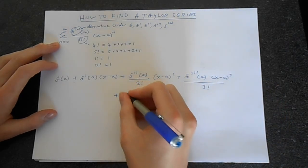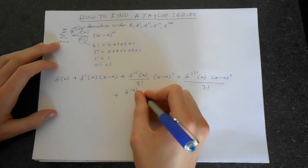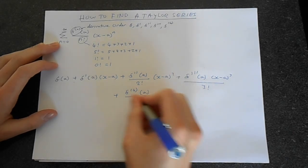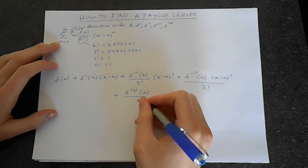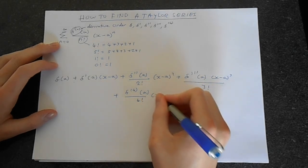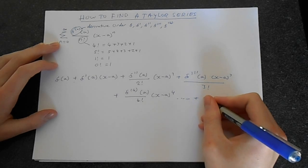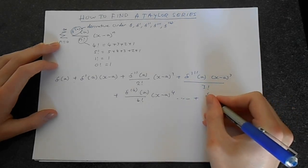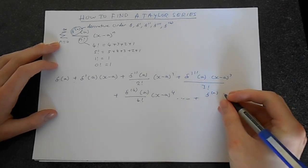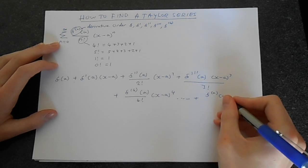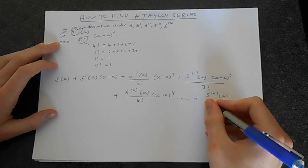Just one more term: f to the 4th, a over 4 factorial. Then we've got x minus a to the power 4, and well, that just goes on and on and on, up to n is infinity, but the series gets pretty accurate with a few terms.